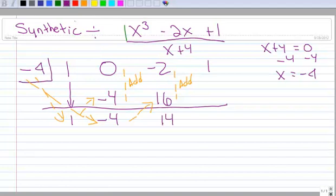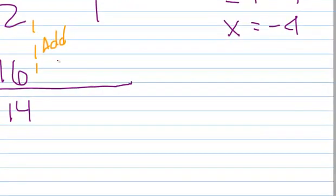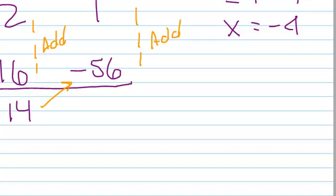And then I do that multiplication again. So I'm running out of room there. Negative 4 times positive 14 is negative 56. So I'm going to write that negative 56 right there. And now I'm going to add this last column. Positive 1 plus negative 56 is going to be negative 55.